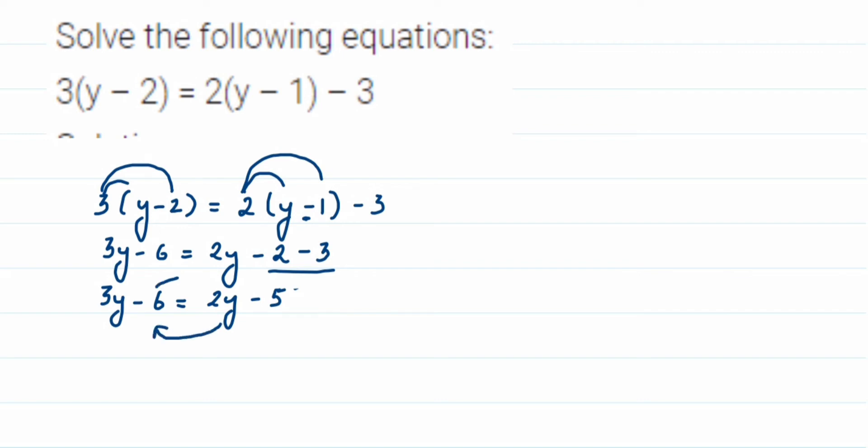Now I'm going to bring 2y to the other side and 6 to the other side. Since 2y is positive, when you bring it to the other side it becomes negative. So 3y - 2y = -5. Don't forget to put the minus there. Minus 6 when you transpose becomes plus.